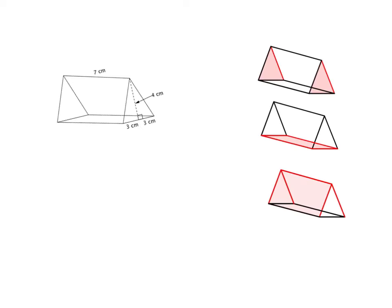If I want to work out the total surface area of a triangular prism, the main thing I've got to do is figure out what all the sides are. So let's start with the easiest bit. The triangular prism has got triangles on either side, so we need to work out the area of those triangles. We know how to work out the area of a triangle — it's half base times height. Here our base is six centimetres and the height is four. Six fours are 24, half of that is 12, so we've got 12 centimetres squared.